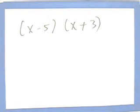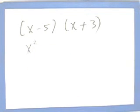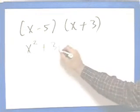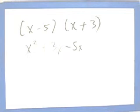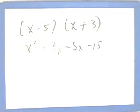What comes first? Good, x squared. Next. Good, 3x. Oops. Next. Okay, minus 5x. Next. Good, minus 15. Now what?